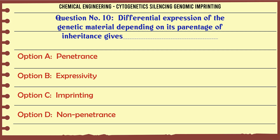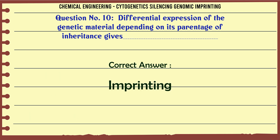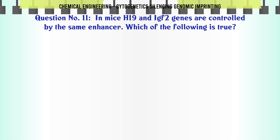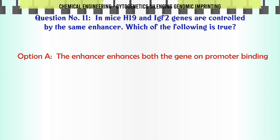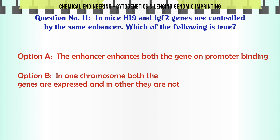Differential expression of genetic material depending on its parentage of inheritance gives: A. Penetrance, B. Expressivity, C. Imprinting, D. Non-penetrance. The correct answer is C: Imprinting.